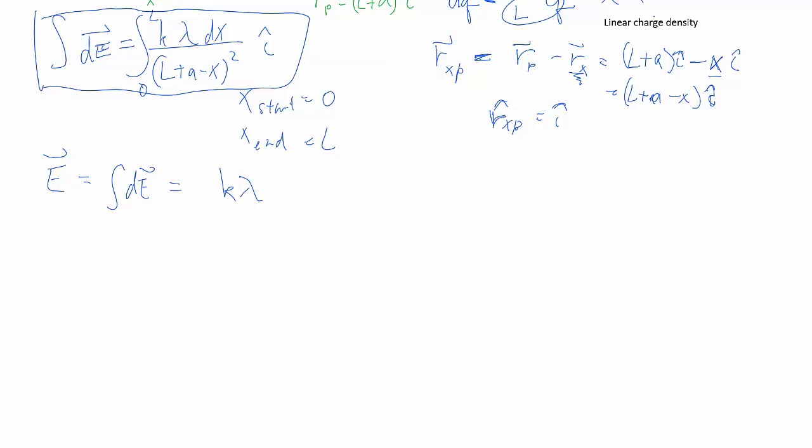k is a constant, that's always the same. Lambda, in this case, it's a constant charge distribution for every single point in x, that stays the same. The direction also stays the same.